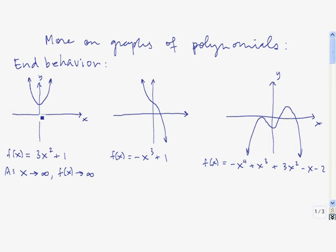When we talk about end behavior, we also have to talk about what happens in the negative infinity direction. So as x approaches negative infinity, we see that the function values are still growing in the positive direction. So as x approaches negative infinity, f of x also approaches infinity, as in the case before.